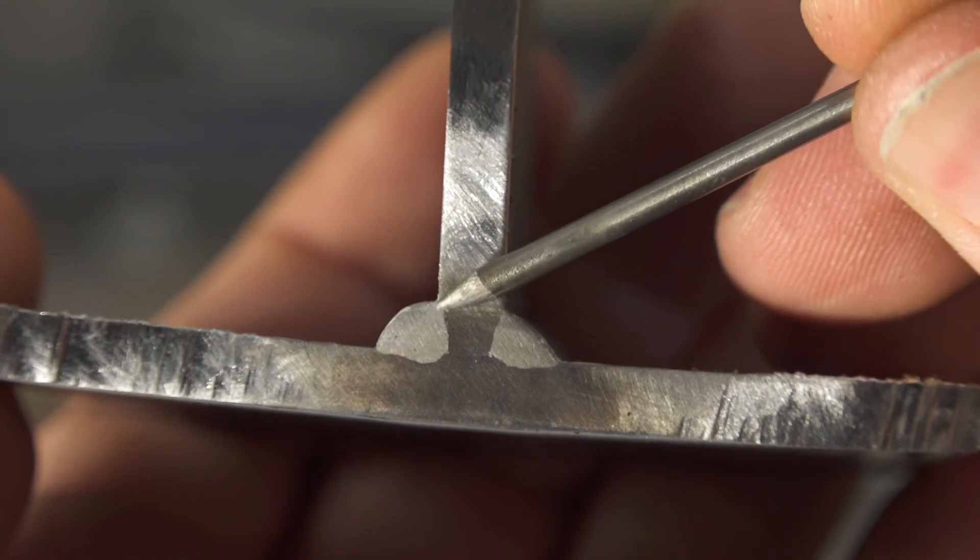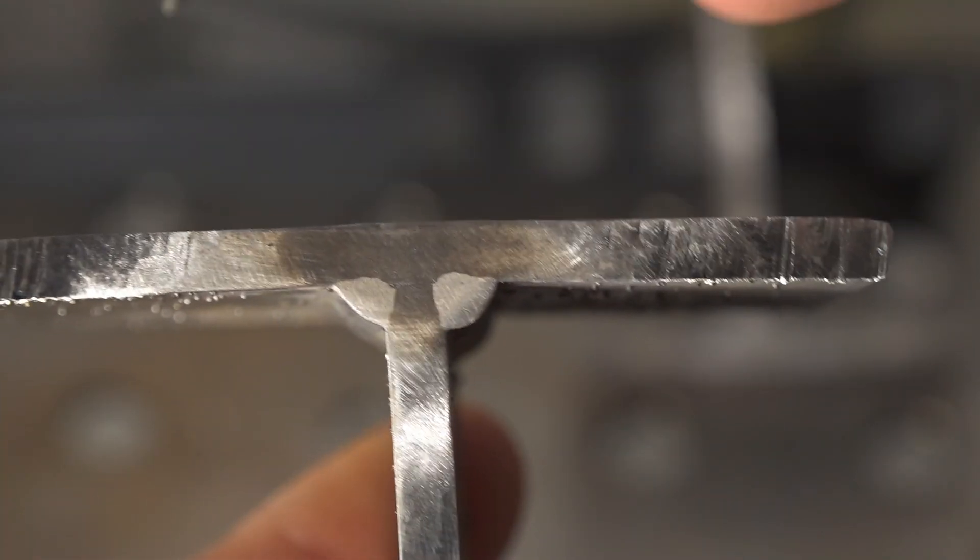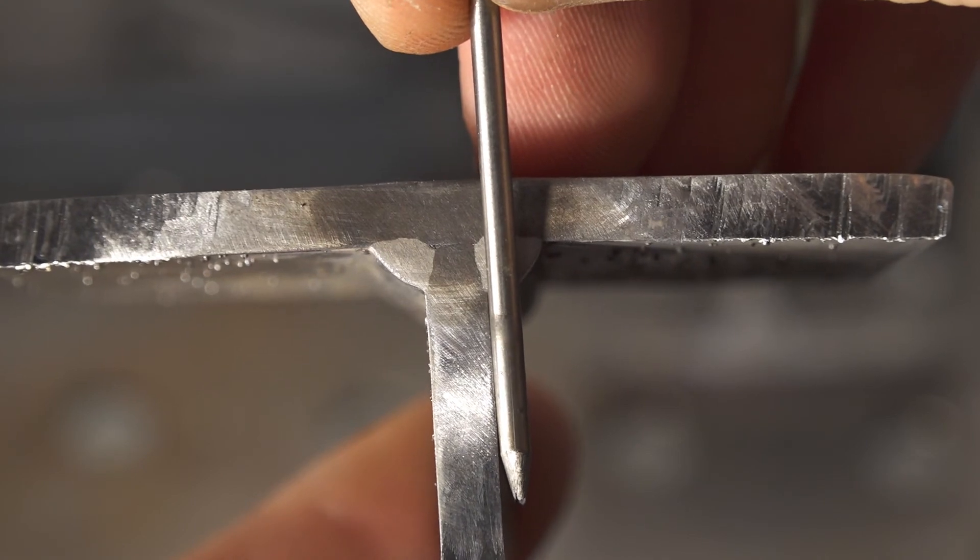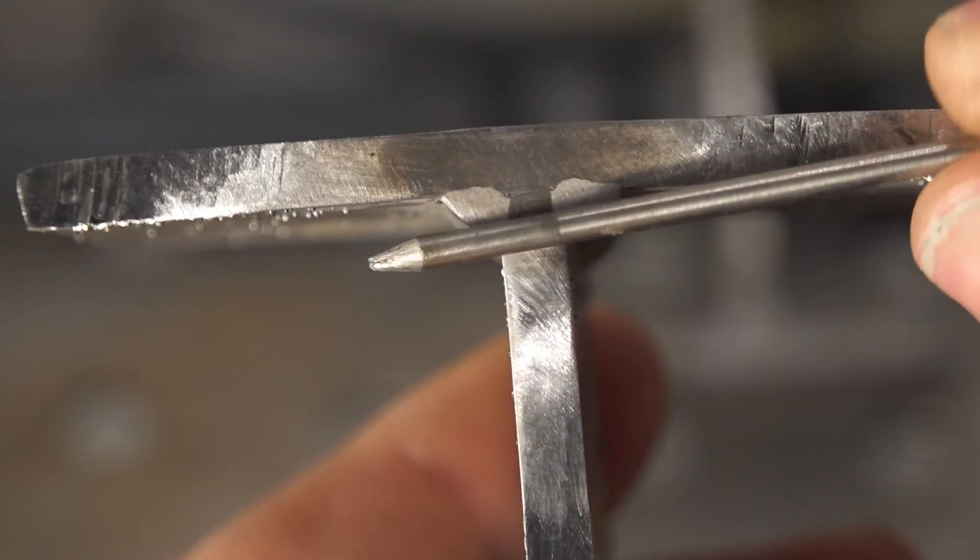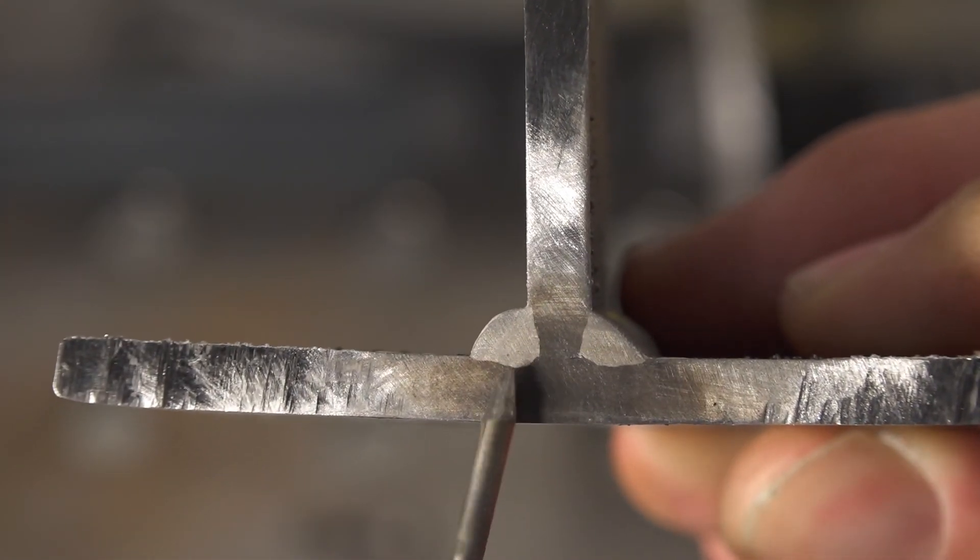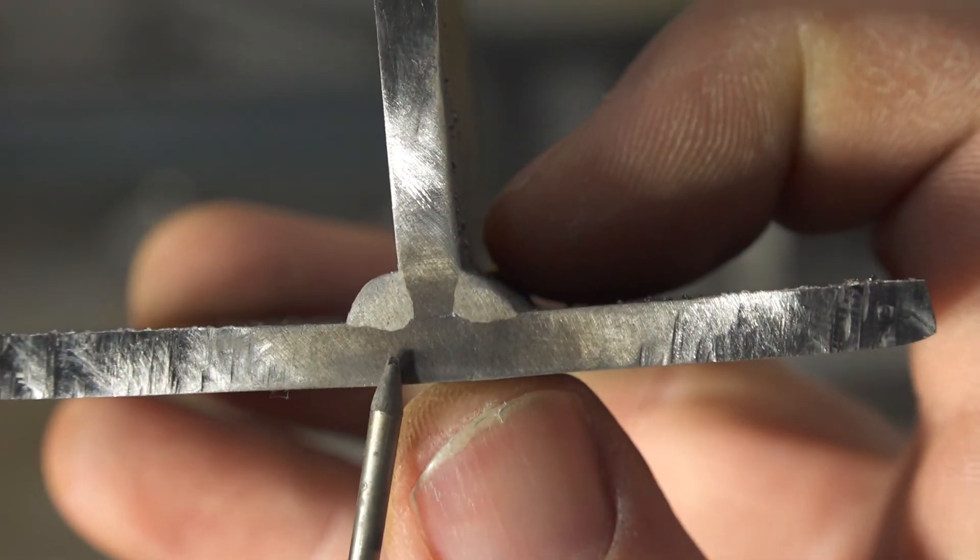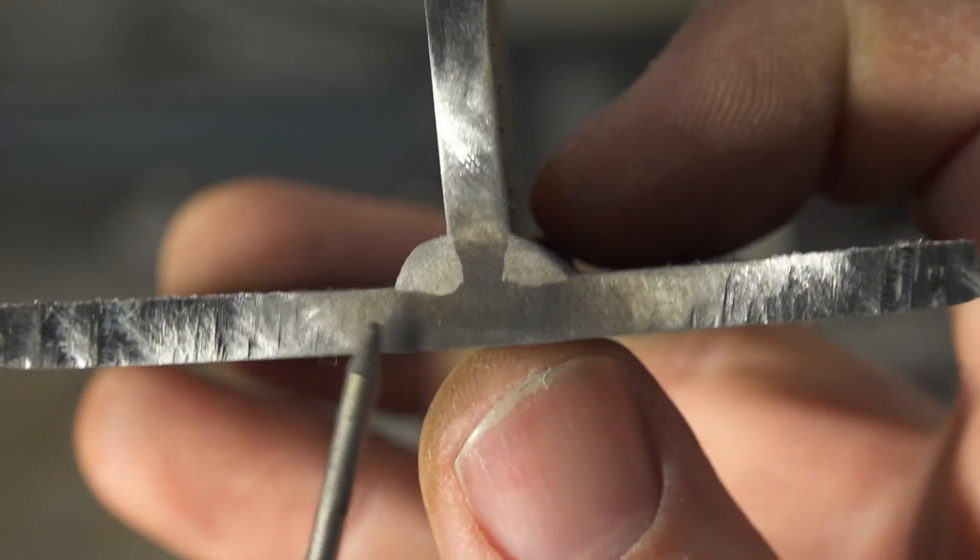And I flipped the part because of the way my light was but you can see definitely getting down into that root with the welder maxed out. So after converting to DC definitely a lot better penetration, not quite as good as a factory DC output welder.